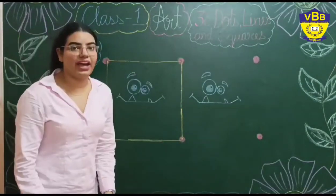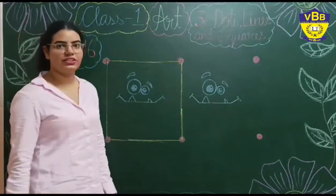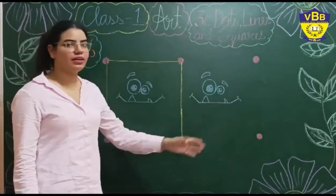And we will make a straight line like this. We got one square. You all got one square, right? So there is one monster. Now let's make another monster.